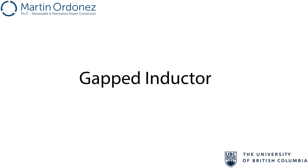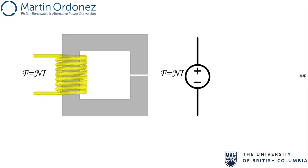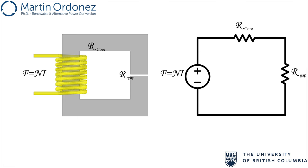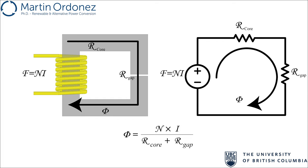Now let's talk about gapped inductors. Here is a simple structure: in its simplest form, it has a winding, a core, and a discrete gap. We use our knowledge of equivalent magnetic circuits to analyze it. The winding is modeled as a voltage source with value N times I. Then we have the reluctance of the core and the reluctance of the air gap. The flux in the core and air gap is equivalent to current in the circuit. To find the flux, we divide the source MMF by the total reluctance, which equals the core reluctance plus the air gap reluctance.